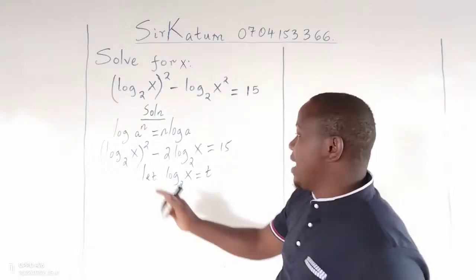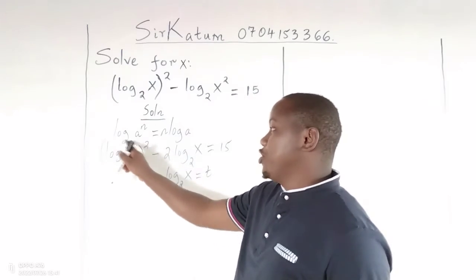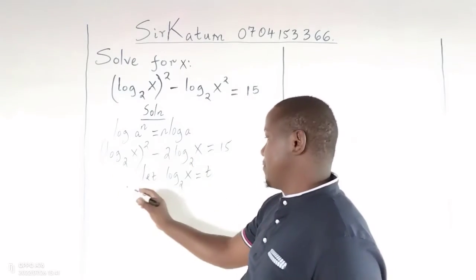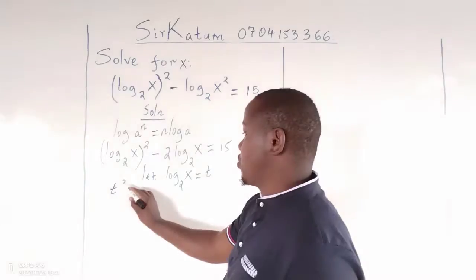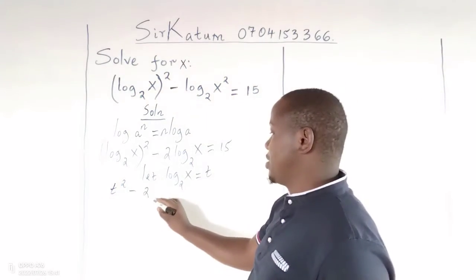So that, because we have logarithm of x to base 2, everything being squared, this part becomes t squared, minus 2 multiplied by t, so 2t, equals 15.